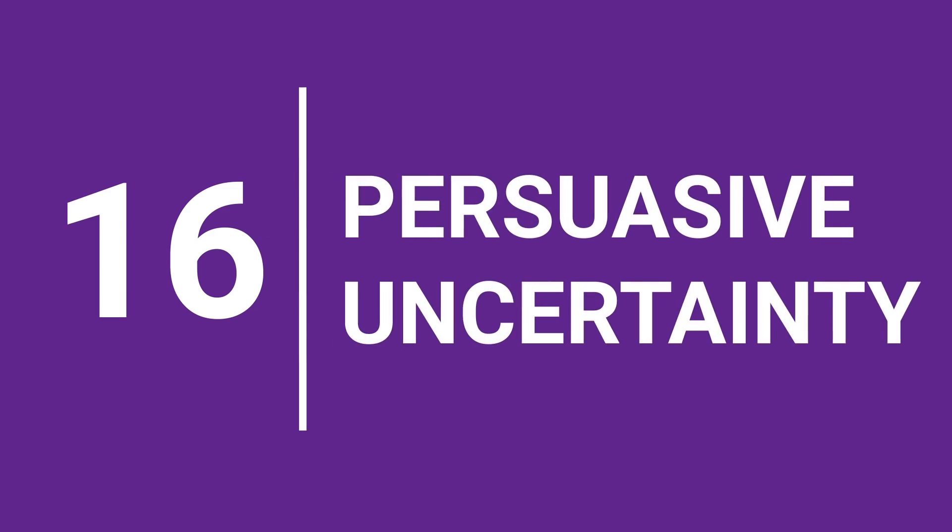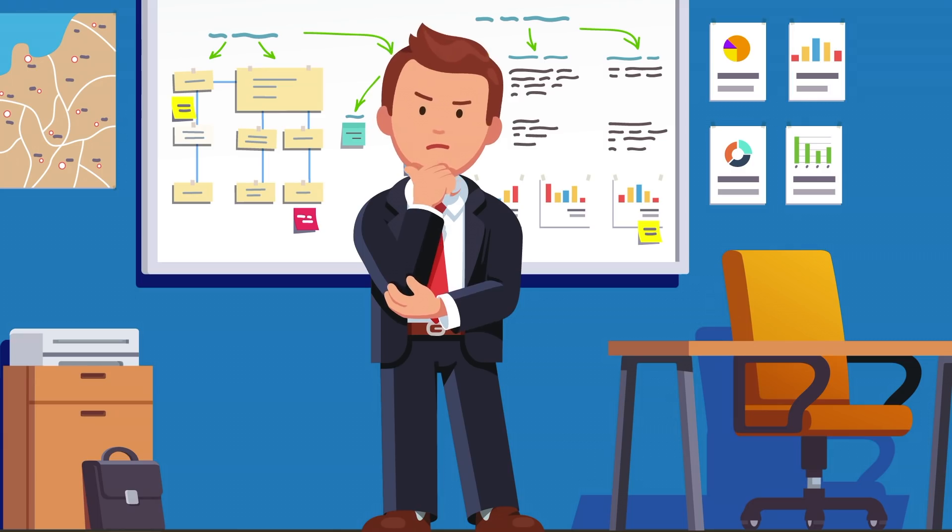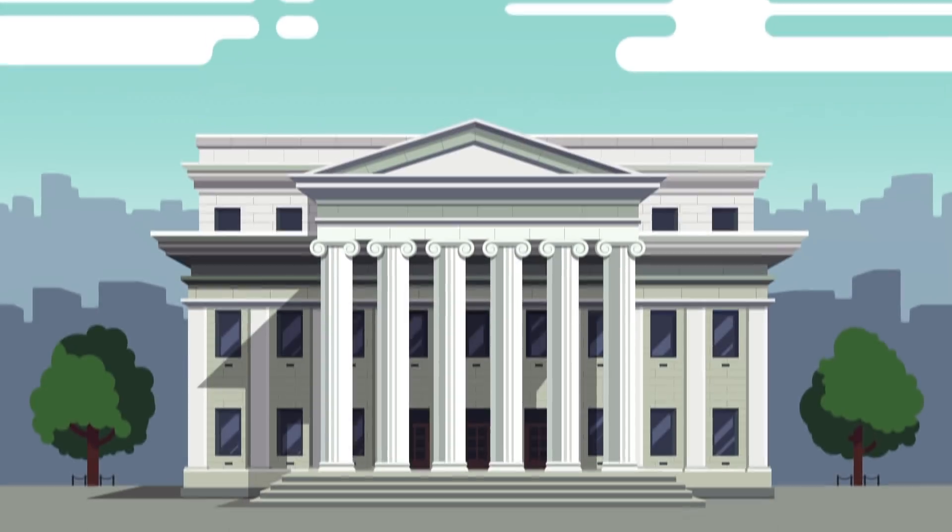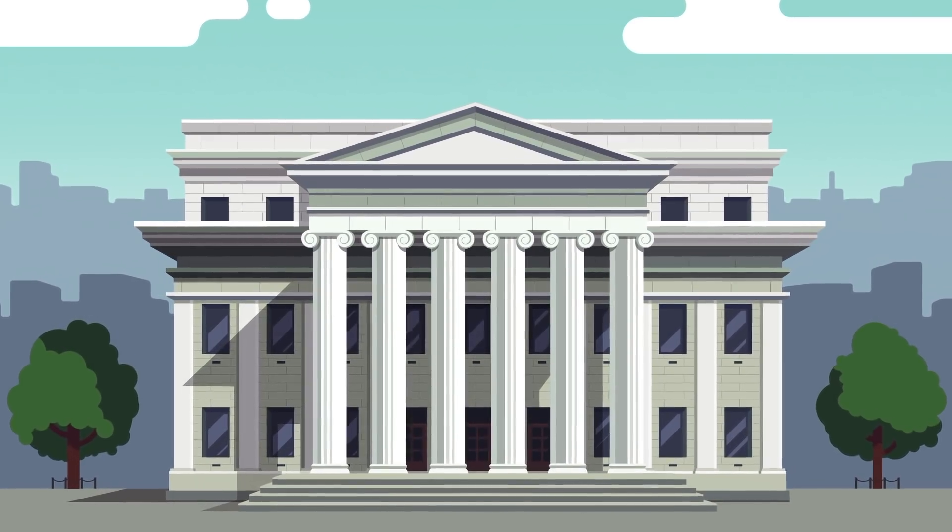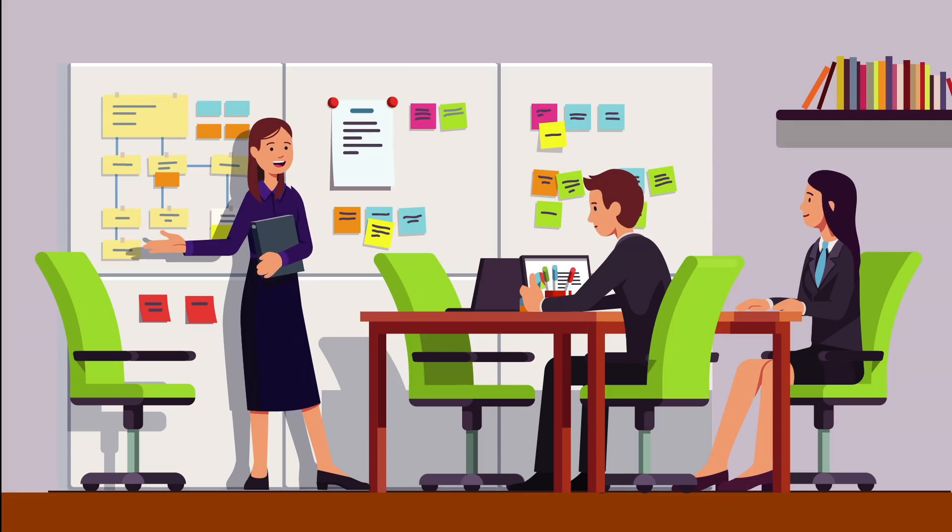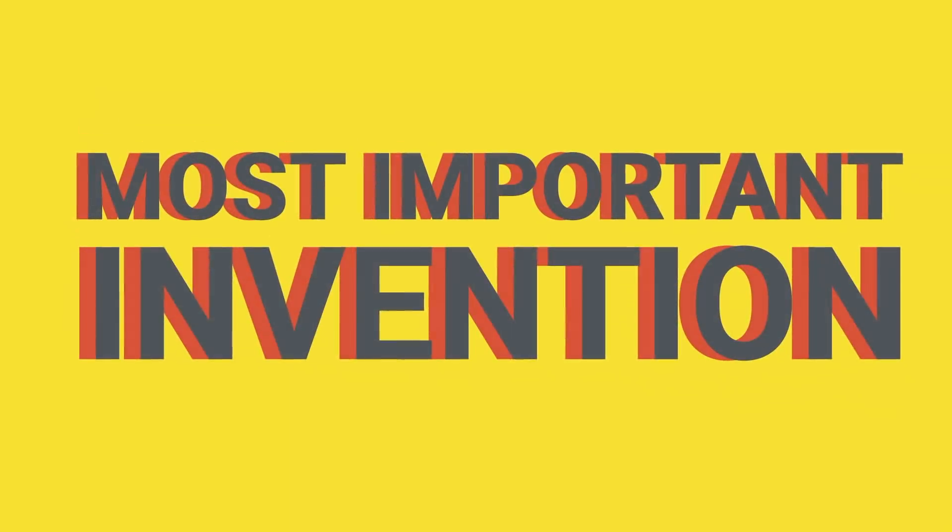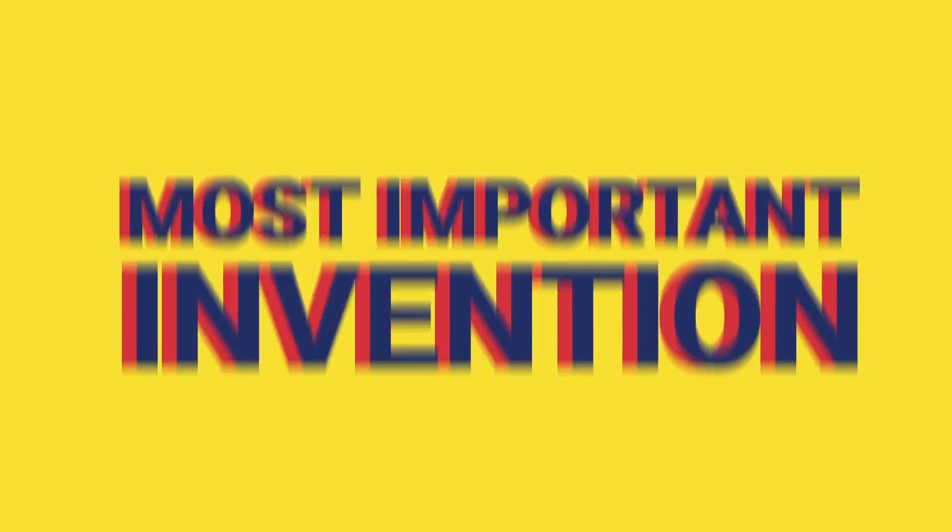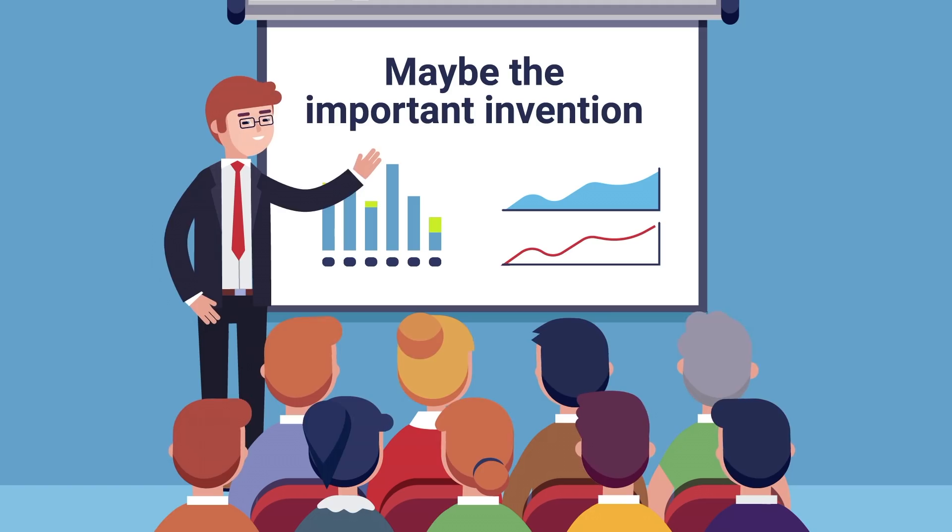Persuasive Uncertainty. You don't have to be certain about something to make a point. In fact, your certainty may be hurting your argument. This comes from a 2016 study from Cornell University. They found that uncertainty can be more persuasive than certainty. Just take these two phrases. This phone is the most important invention in history. Versus, this phone may be the most important invention in history.